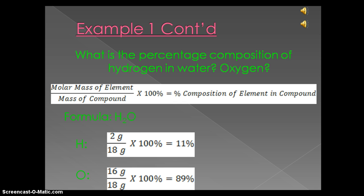Continuing on, we need to use the equation molar mass of an element divided by the mass of our compound times 100% will equal percent composition of the element in our compound. So, with water, hydrogen, which has a mass of one gram. However, in water, we have two hydrogens, so we have two grams. Those two grams divided by the 18 grams of the mass of the compound times 100 will give you 11%. For oxygen, that is a mass of 16 grams divided by the mass of our compound, which is 18 grams, times 100% equals 89%.